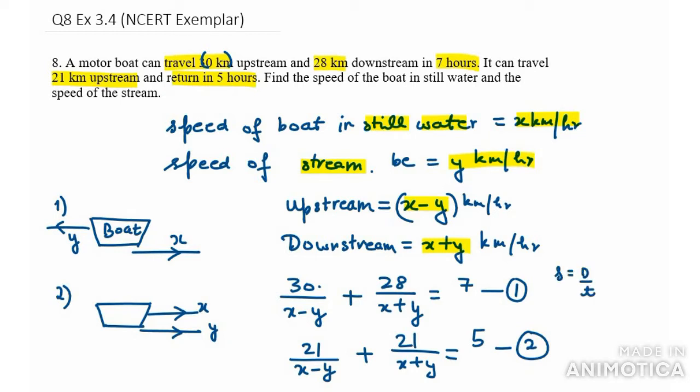You know that speed formula is distance over time. So time equals distance over speed. For the first condition: 30 km upstream gives us 30 over x minus y, plus 28 km downstream gives 28 over x plus y, equals 7 hours.